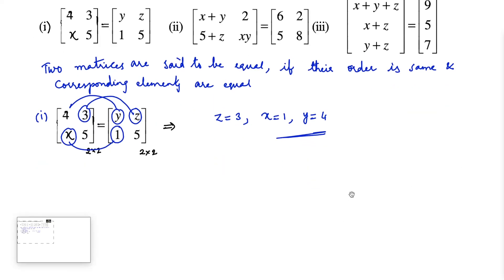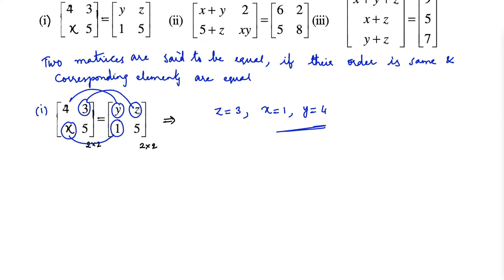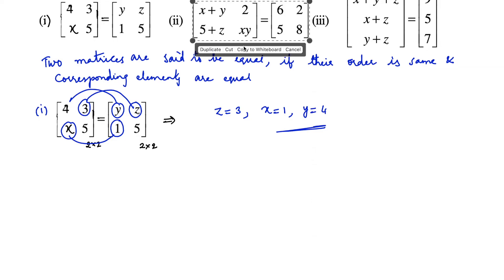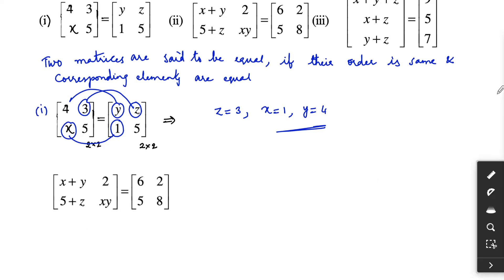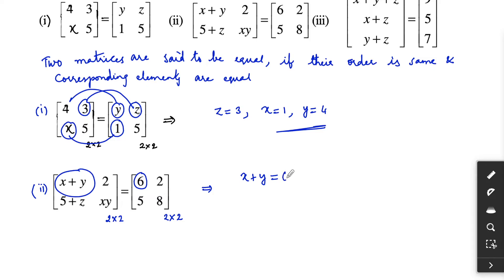Now let us consider the second case. Again, both are 2 by 2 matrices so their orders are the same. Therefore x is equal to 5 and since the matrices are equal, we can consider the corresponding elements are equal. So x plus y is equal to 6, and 5 plus z is equal to 5, and x times y is equal to 8.